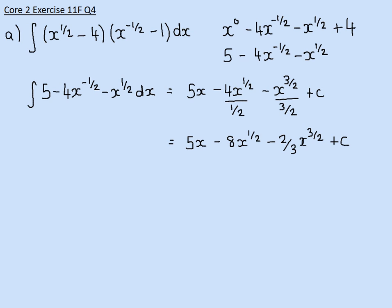Now, in part B, they ask us to use our answer to part A to evaluate a definite integral. And what we're evaluating is this between the limits 4 and 1. So we've already worked out that when we integrate this, we get this stuff here. So what I've got to do is work out what that is between the limits of 4 and 1.